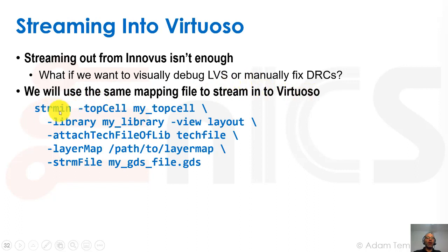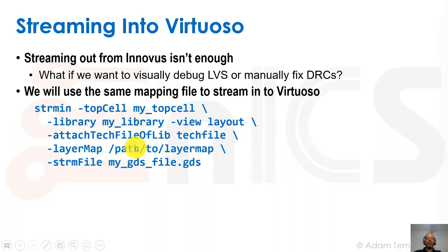The command is called strmin in the Cadence environment. For stream-in, you give it the top cell name, the design name, the library in Virtuoso that will be created or used, the view name (layout view), the tech file to attach, the layer map path — the same one used for streaming out — and the stream file, which is the actual GDS file to stream in. Once you run that, you can open and see your cell as one of the options inside your layout view.